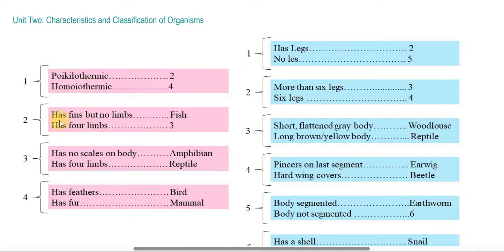If the cold-blooded animal has 4 limbs, that is very important for classification. If it has a scaly body, it is a reptile. If it has 4 limbs without scales, it is an amphibian.